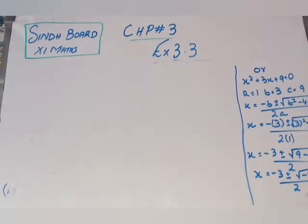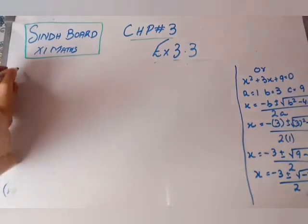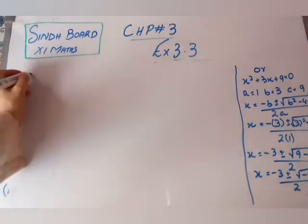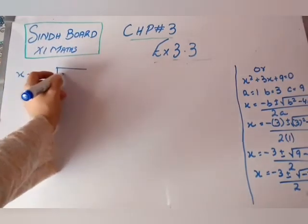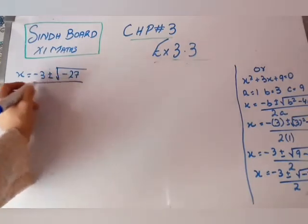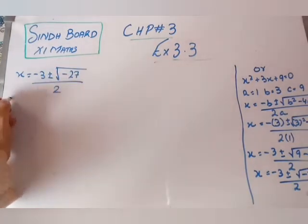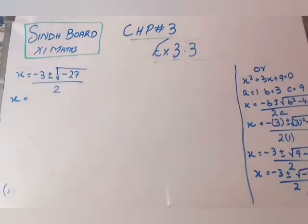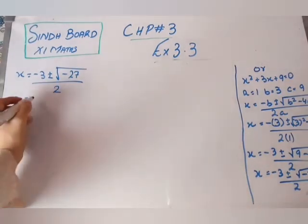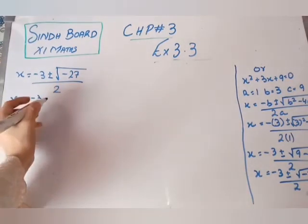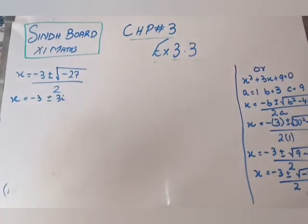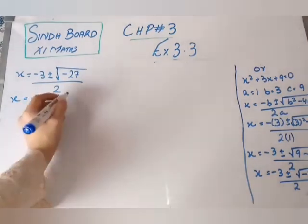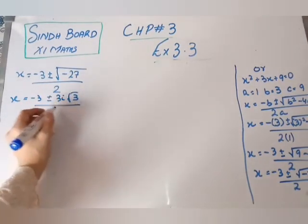After simplification, we have x equals to minus 3 plus or minus under root of minus 27, upon 2. This further simplifies to x equals to minus 3 plus or minus 3 iota under root 3, upon 2.